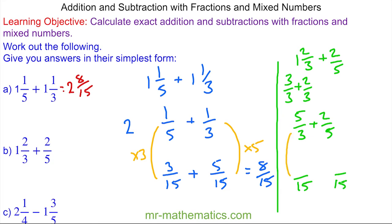So I multiply this fraction by five which gives me twenty-five fifteenths, and I multiply this fraction by three which gives me six-fifteenths.